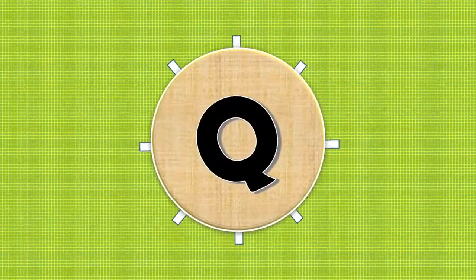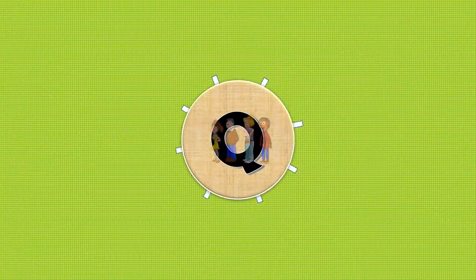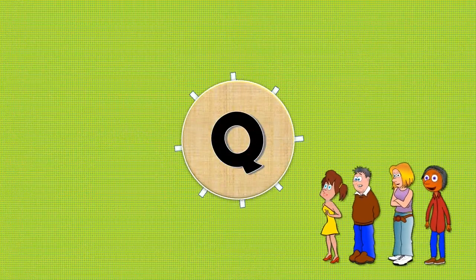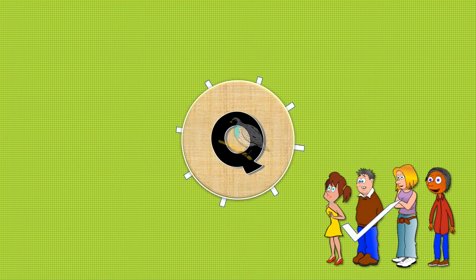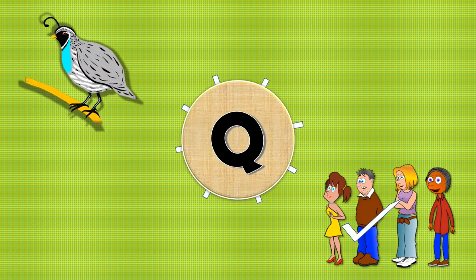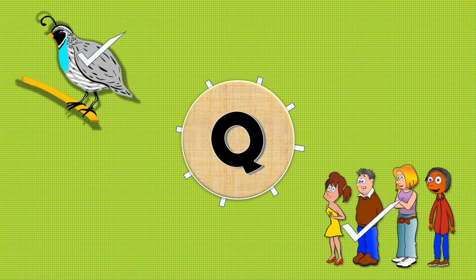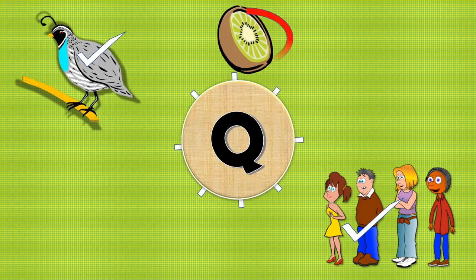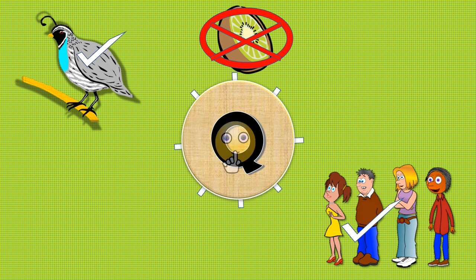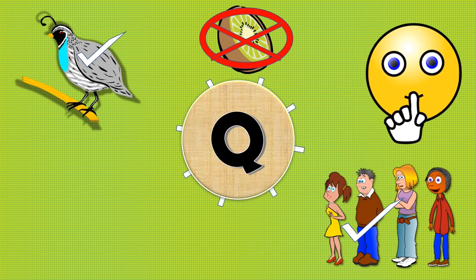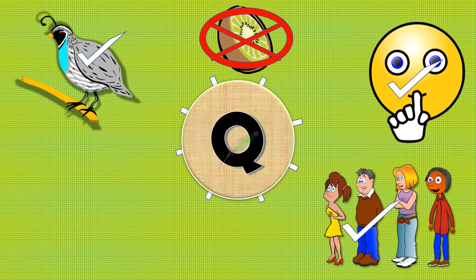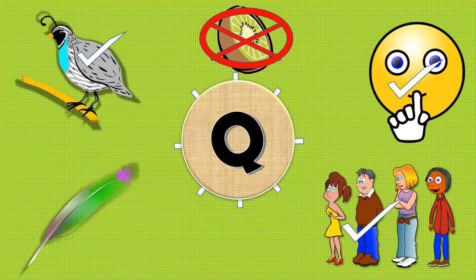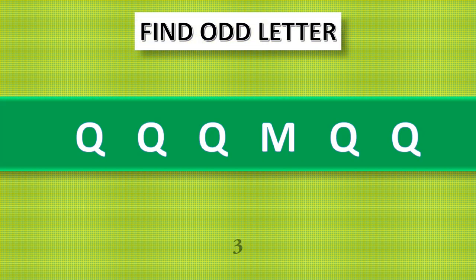Q. Q for queue, correct, yes. Q for quail, correct, yes. Q for kiwi — no, it's wrong. Q for quiet, correct, yes. Q for quill, correct, yes. Find odd letter.